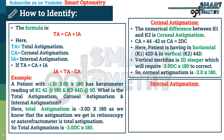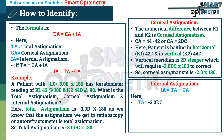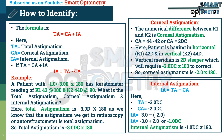Now how to identify internal astigmatism? The formula is: internal astigmatism = total astigmatism - corneal astigmatism. Here, total astigmatism is -3.00 D cylinder and corneal astigmatism is -2.00 D cylinder at 180° axis. So internal astigmatism is -1.00 D cylinder at 180° axis. To summarize: total astigmatism is -3.00 D at 180°, corneal astigmatism is -2.00 D at 180°, and internal astigmatism is -1.00 D at 180°.